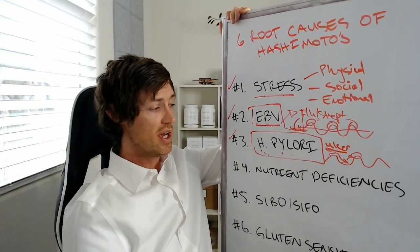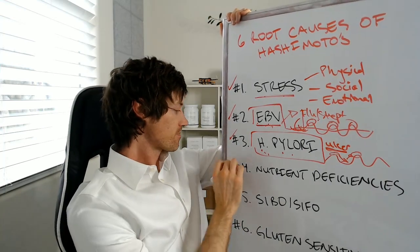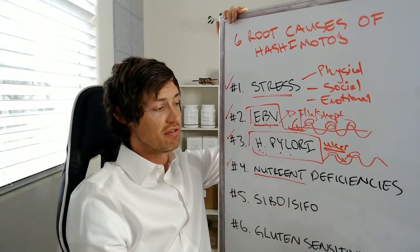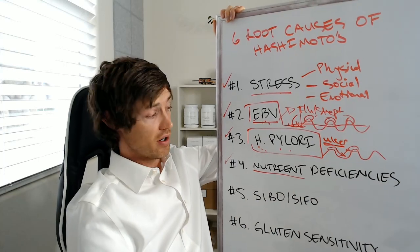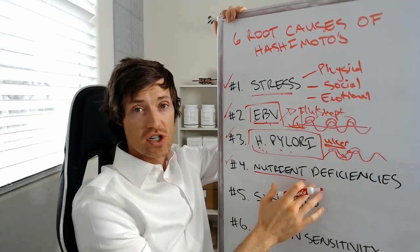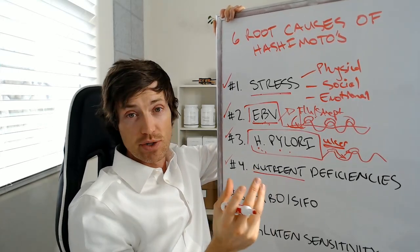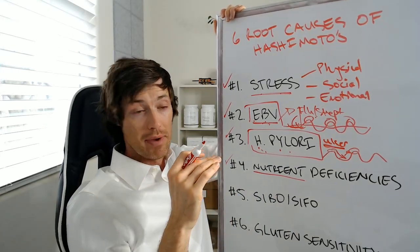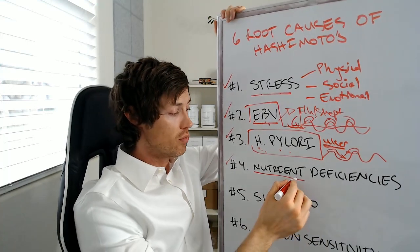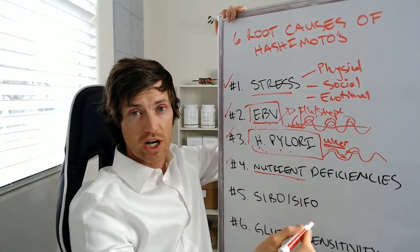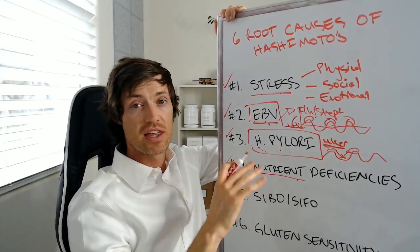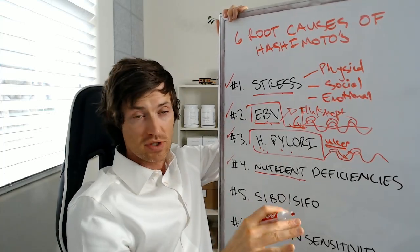Next on the list would be nutrient deficiencies. Now this is really important. I think these nutrient deficiencies tend to, in my opinion, create a scenario in which Hashimoto's thyroiditis can thrive and allows it to sort of occur. I don't think they're directly responsible for the triggering of Hashimoto's thyroiditis, but I definitely think they're part of creating the environment which allows it to come through.